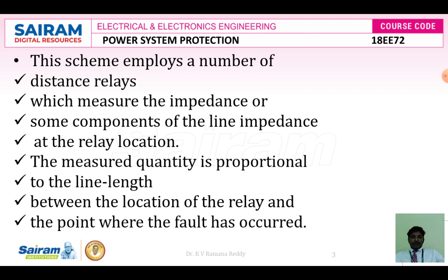The system becomes very complicated because instead of using one transformer, it converts AC to DC, then DC is converted to ones and zeros as digital quantities through data acquisition systems. That data is compared with level detector 1 with a preset value, then level detector 2, and in between we use time delay circuits like RC and RL circuits. Then level detector 3 — so the system becomes very complicated when comparing with so many level detectors against fault-activating quantities like voltage, current, and power through phase angle, and we are not satisfied with the better operations.